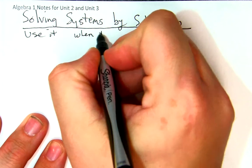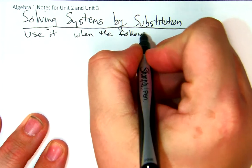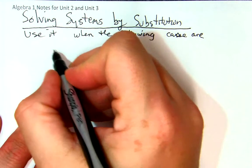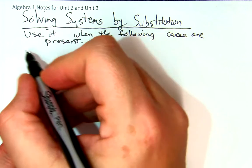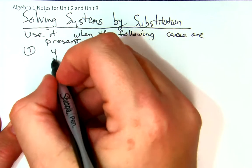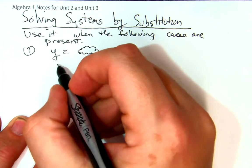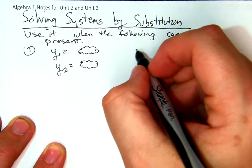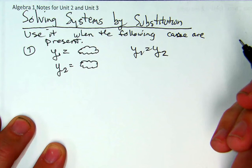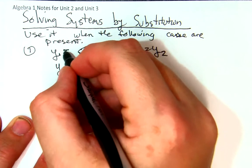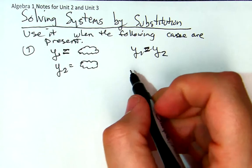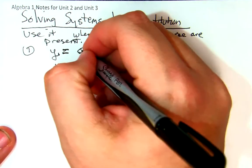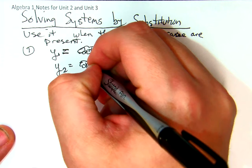Use it when the following cases are present. If you have y equals something, that's like y sub 1 equal to something, and you have y sub 2 equal to something, what you'll do is you'll set y sub 1 equal to y sub 2. So this could be like 2x plus 4, and that could be negative x plus 3.